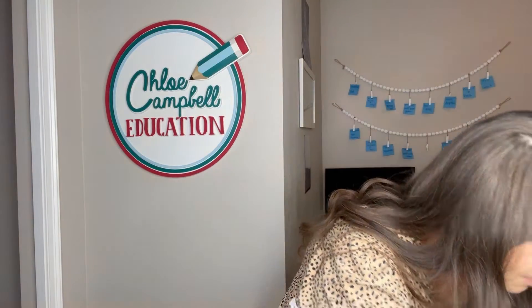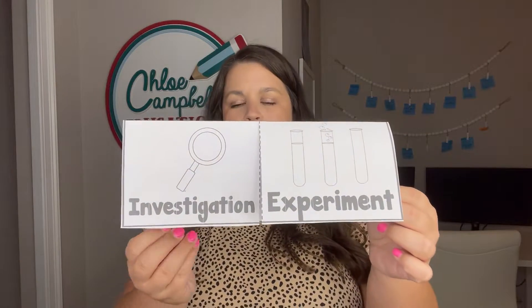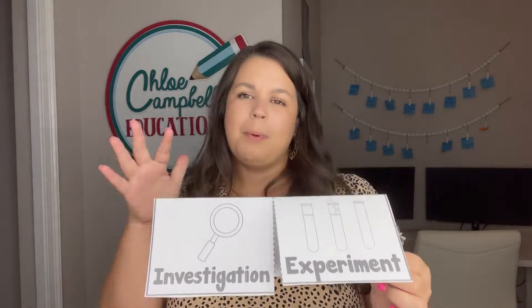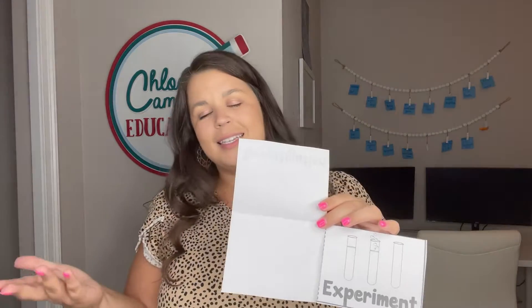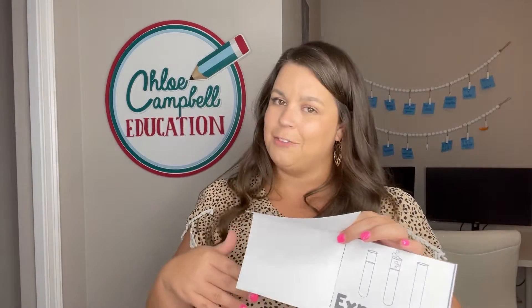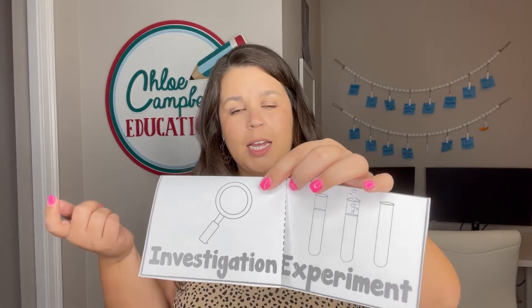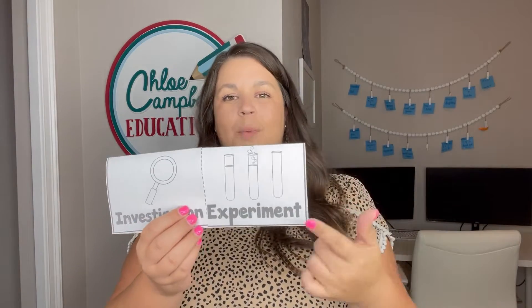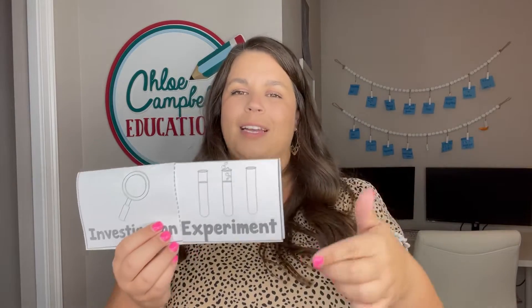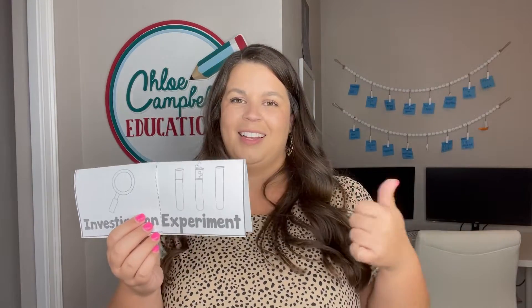Then on day three of teaching this, students come into class and we create an investigation and experiment foldable. We spend about the first 10 or 15 minutes of class and we write things down — yes, it can have a hypothesis but it doesn't have to; yes, we are still observing or measuring, but we're not comparing results in an investigation. Then we look at experiments, and normally by this point students can start to tell you what belongs inside this foldable, which is really helpful.